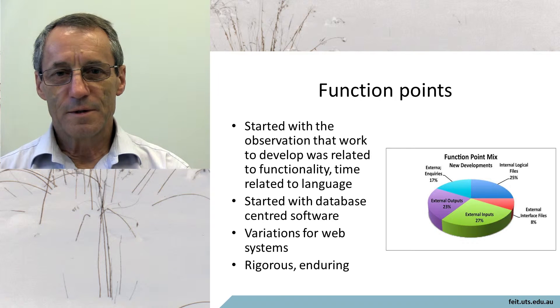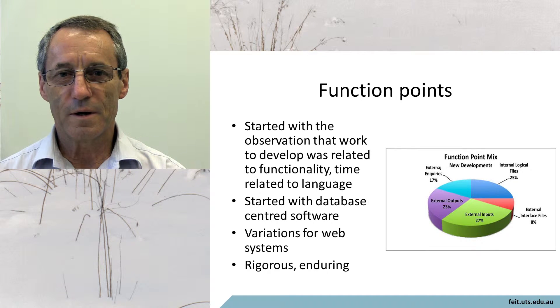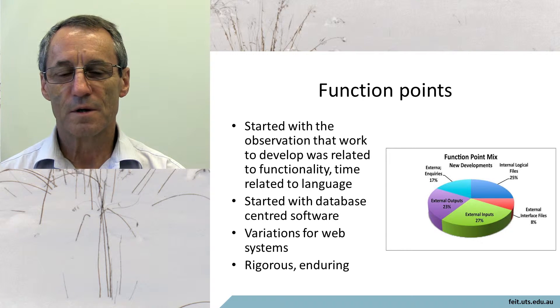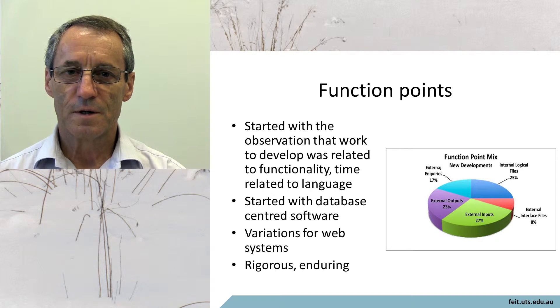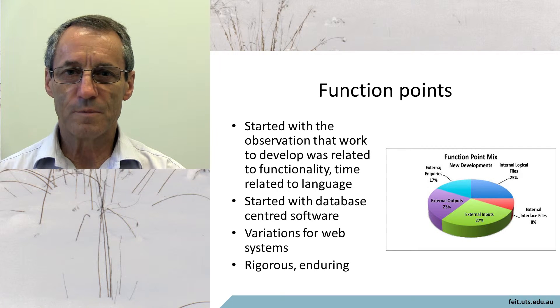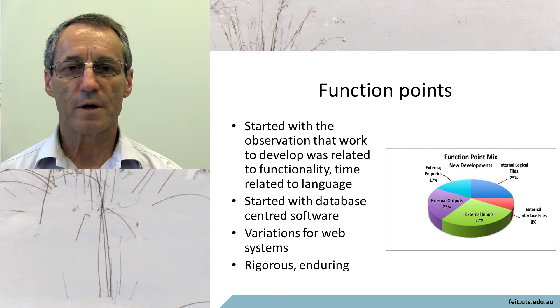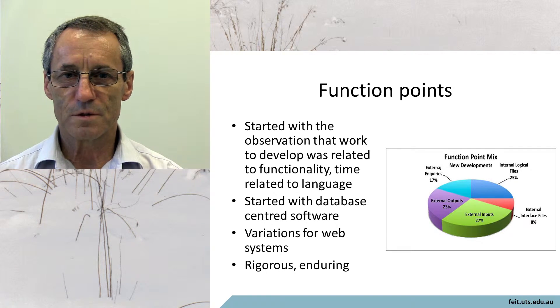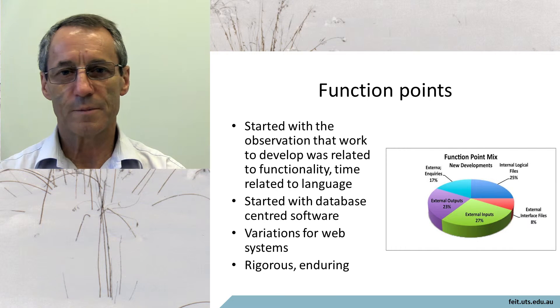Function points were proposed by Alan Albrecht of IBM back in about 1968 and was based on the observation that the work took about the same amount of time depending on the functional characteristics of what it was they were going to do. The functional characteristics were in terms of how many input files, how many output files,